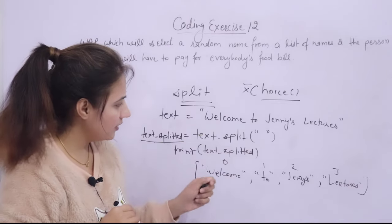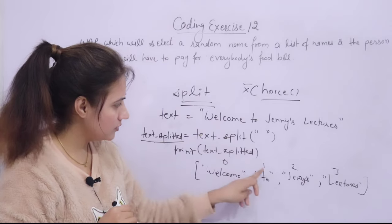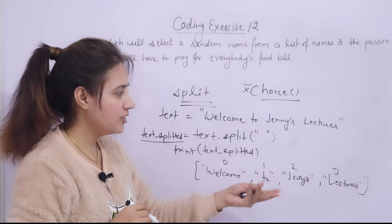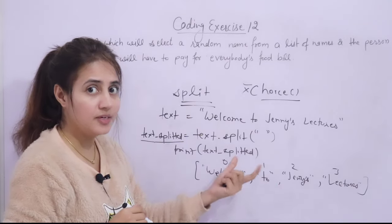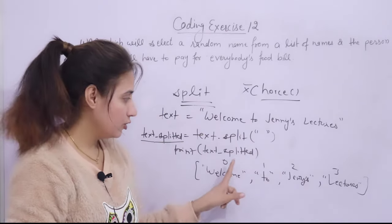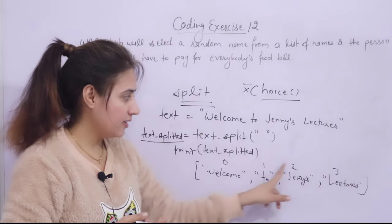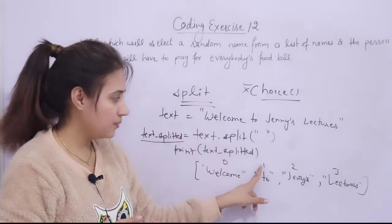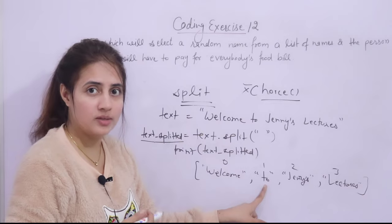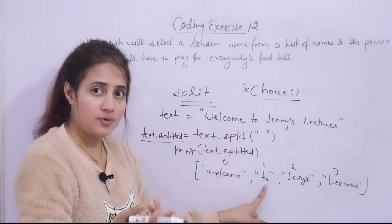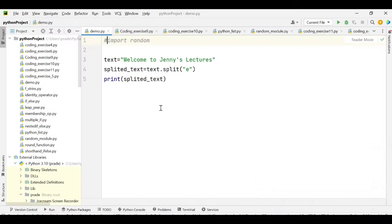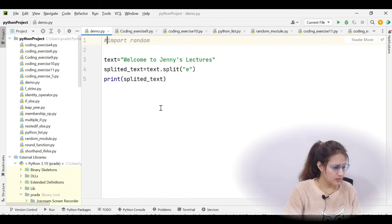You can access these items using their index: 0 for welcome, 1 for to, 2 for jenny's, 3 for lectures. To access an item, use the list name — like text_splitted — with square brackets and the index, so text_splitted[0] prints welcome. As another hint, you can generate a random integer in a range using randint, map that random number to an index, and get the name at that position. Pause the video and try the exercise.